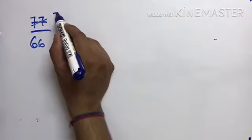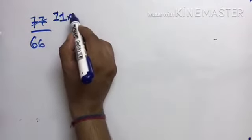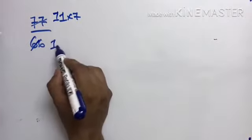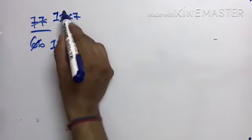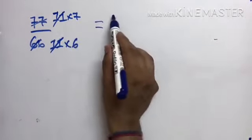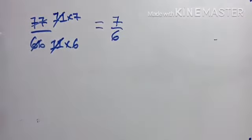This is 11 times 7 is 77. 11 times 6 is 66. 11 and 11 cut. So this is 7 by 6.